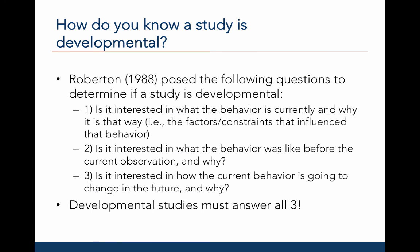Before completing our discussion of research designs, it's important to determine if a study is actually developmental. In 1988, Mary Ann Roberton proposed the following questions: First, the study must be interested in what the behavior is currently and why — what factors or constraints influence it? Second, the study must be interested in what the behavior was like before the current observation and why. Lastly, the study must be interested in how the current behavior will change in the future and why. All three of these questions must be answered or at least discussed for a study to be truly developmental.